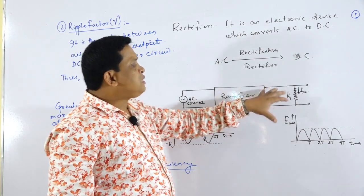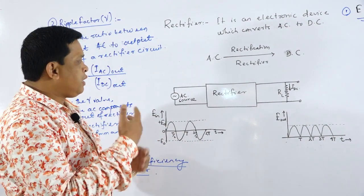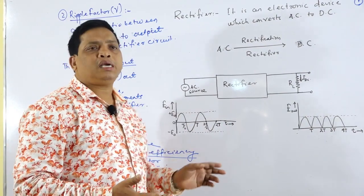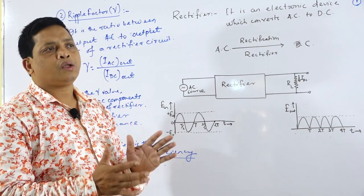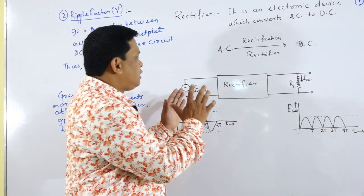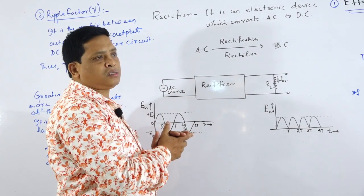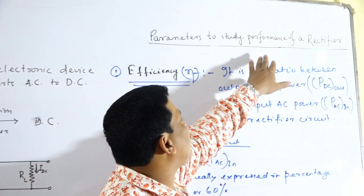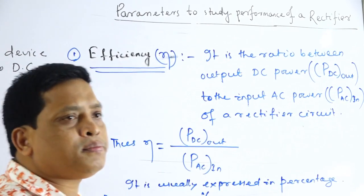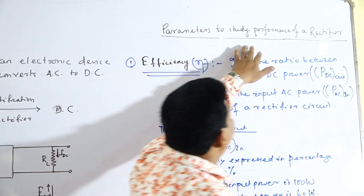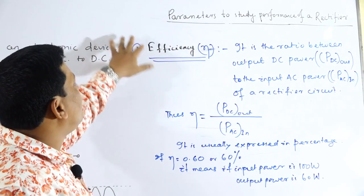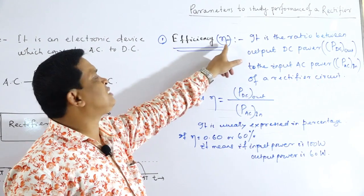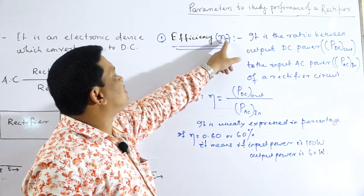To study the performance of the rectifier — how effectively the rectifier circuit is converting AC to DC — we have to decide certain parameters. The performance of a rectifier circuit can be studied by two important parameters. The first parameter is efficiency, denoted by the symbol eta.